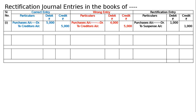Second part: credit sale to Anuprakash 7000 was recorded in Purchase book. The correct entry for a credit sale is Anuprakash debited to sales account 7000. This is the correct journal entry. However, it was recorded in the Purchase book, so the entry was passed incorrectly as Purchase account debited to Anuprakash 7000.